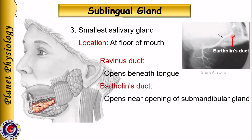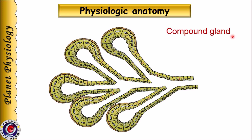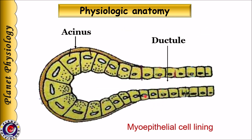Now let us study the histological features of the salivary gland. These are compound glands made up of smaller units and ducts fused to form higher-order ducts. As shown in this picture, the individual units unite to form a compound gland. The small duct of each unit blindly ends to form a globular acinus.